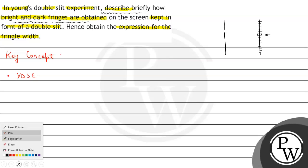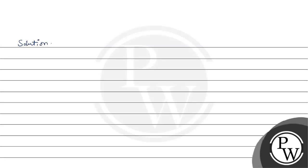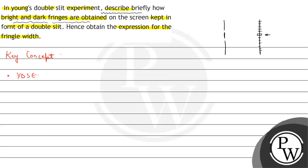Now let us write our solution. In Young's double slit experiment, when light waves from two illuminated slits are incident on the screen, the path traveled by light from each slit to a given point is different. Due to this path difference, a phase difference in the two light waves occurs.